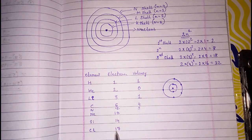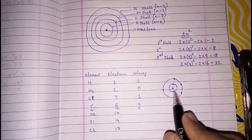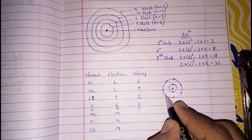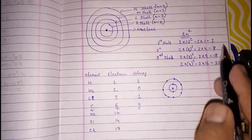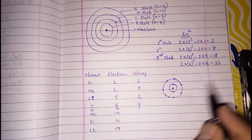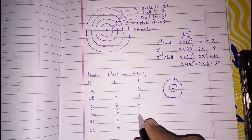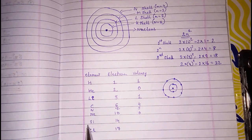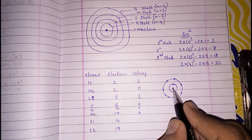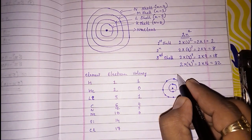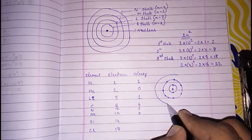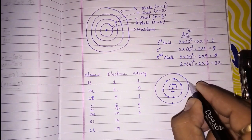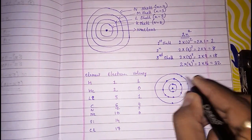Now look at neon with atomic number 10: two in the first orbit and eight in the second orbit — already completed. So neon is stable and will not combine with any element. Now for silicon with atomic number 14: two, then eight, and then four remaining in the next orbit.